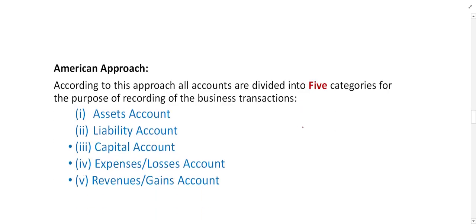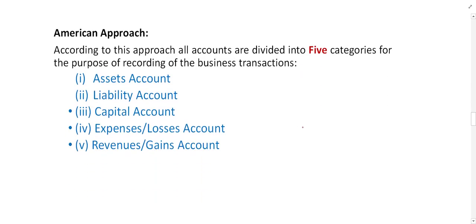Let's look at the American approach. According to this approach, all accounts are divided into five types or categories for the purpose of recording business transactions. This approach was developed by Americans. All accounts in a business, even if you have thousands of different accounts, are basically categorized into these five types.